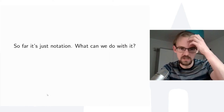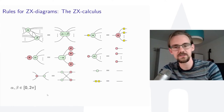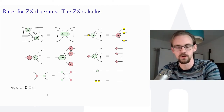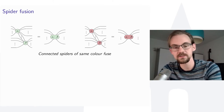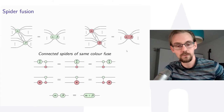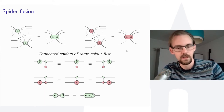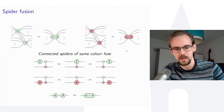What makes ZX calculus powerful is that it comes with a set of rewrite rules — ways to graphically transform a diagram while preserving the linear map up to global scalar. The most fundamental rule is spider fusion: if two spiders of the same color are connected, they fuse together. This subsumes many circuit identities: a T gate commuting through a CNOT control, a NOT gate copying through a CNOT target, and two phase rotations of the same axis combining into one larger rotation — all are instances of spider fusion.